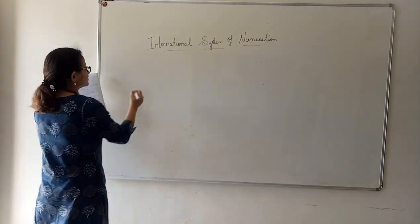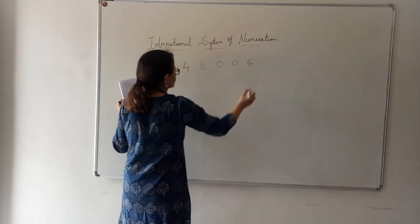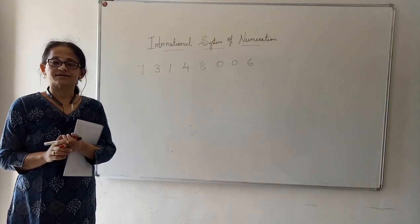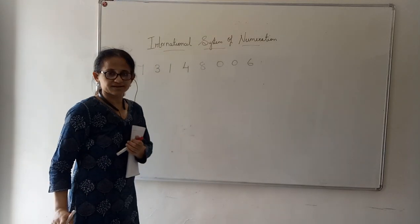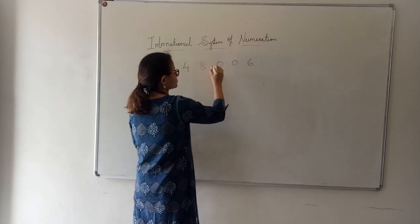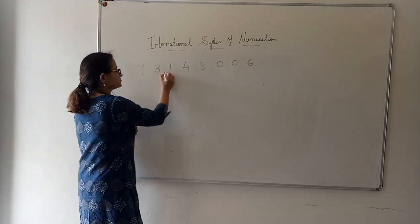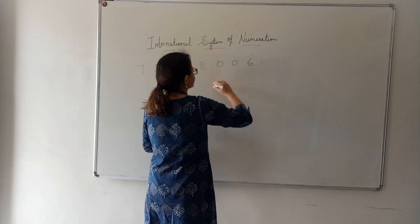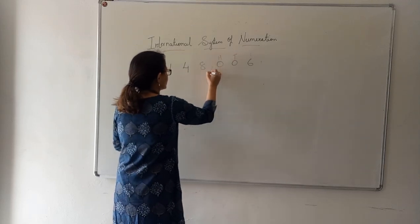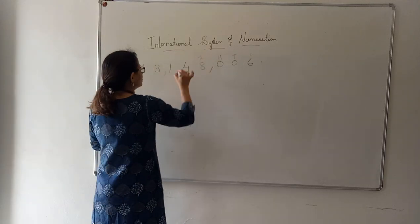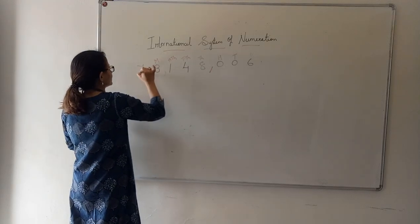One more example. The number is 7, 3, 1, 4, 8, 0, 0, 6. I have to name this number in the international system of numeration. As I told you before, we will start putting commas after every 3 digits from the back: 6, 0, 0 — comma; 8, 4, 1 — comma; 7, 3. Now we find the place values: 6 is at the 1's place, 0 is at the 10's place, 0 is at the 100's place, 8 is at the 1,000's place, 4 is at the 10,000's place, 1 is at the 100,000's place, 3 is at the millions place, and 7 is at the 10 millions place.